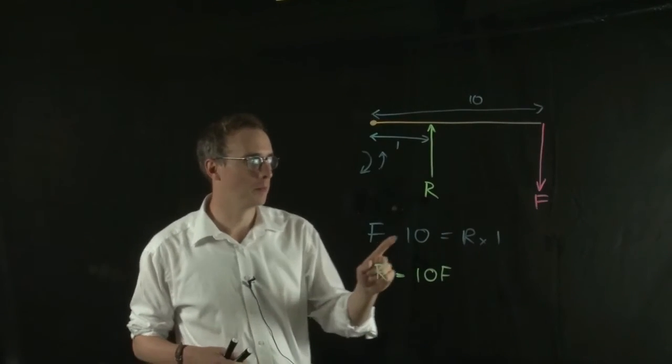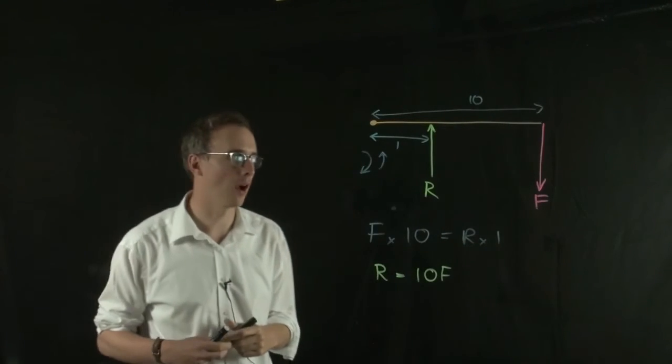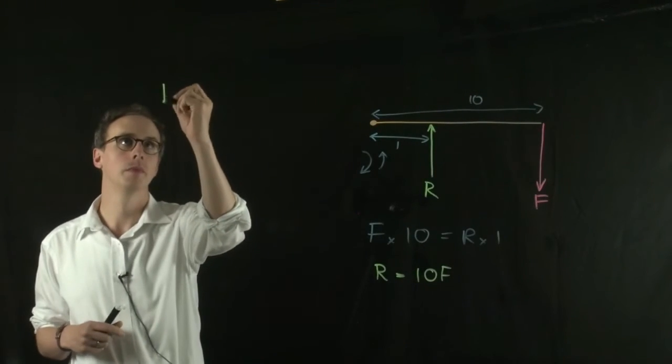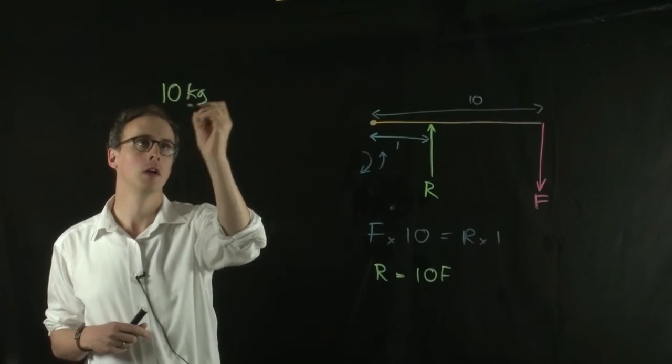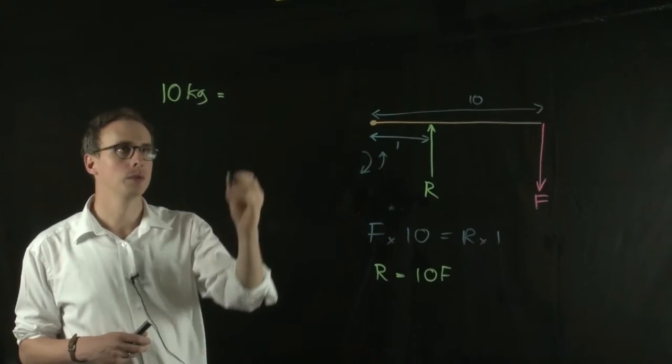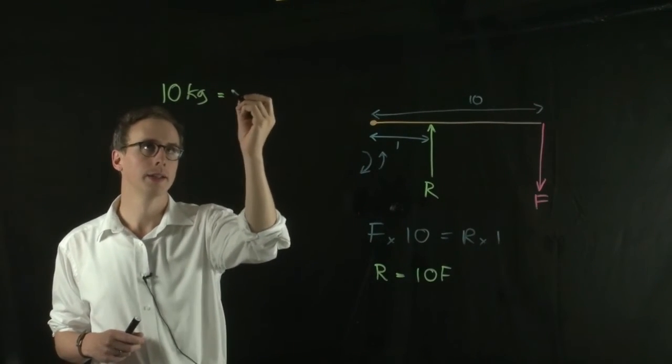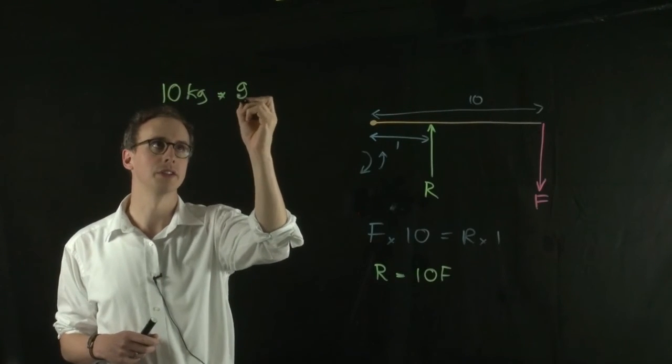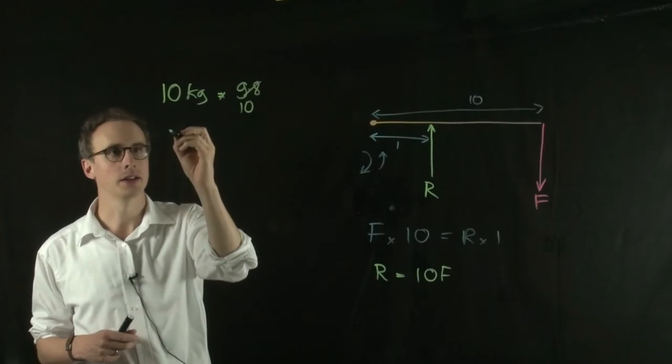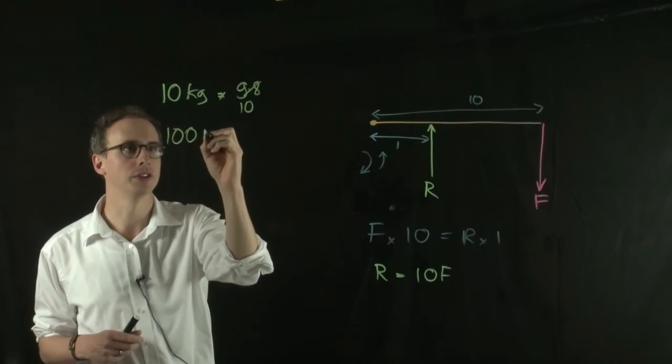If we suspend 10 kilograms onto the end of our odometer arm, and multiply that by the acceleration due to gravity, 9.8, or if we call that 10, that's equal to 100 newtons of force.